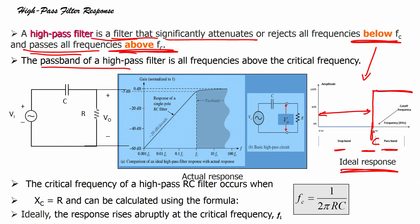If I draw a gain versus frequency plot, I will have a plot which is exactly opposite to that of a low pass filter.